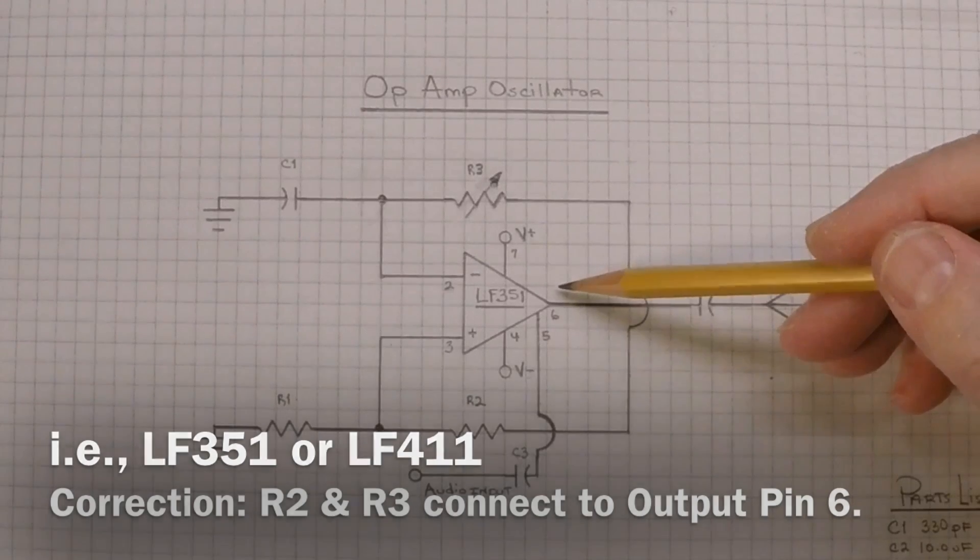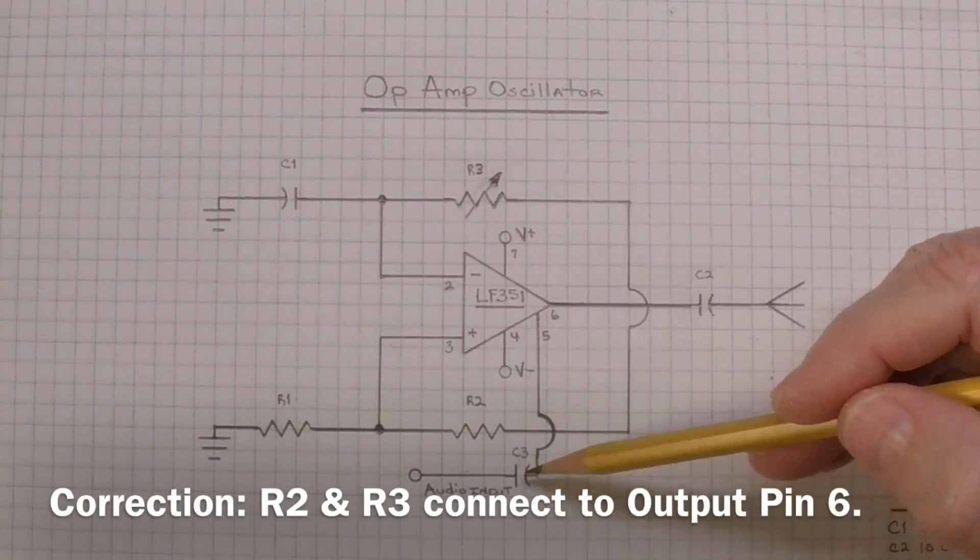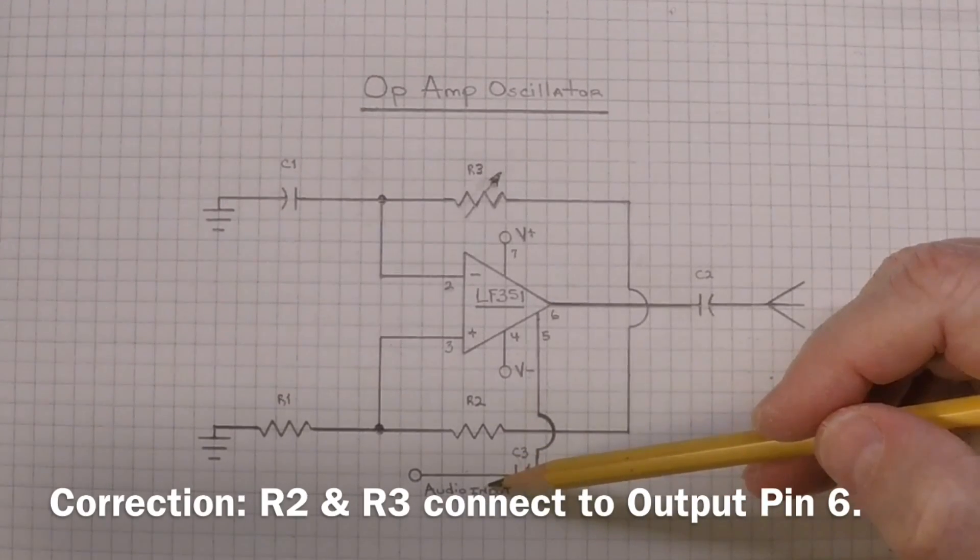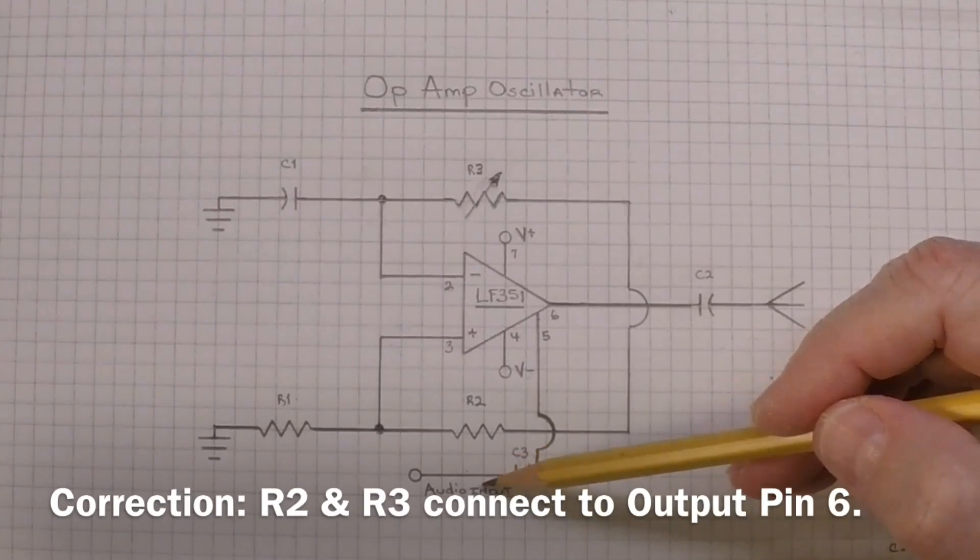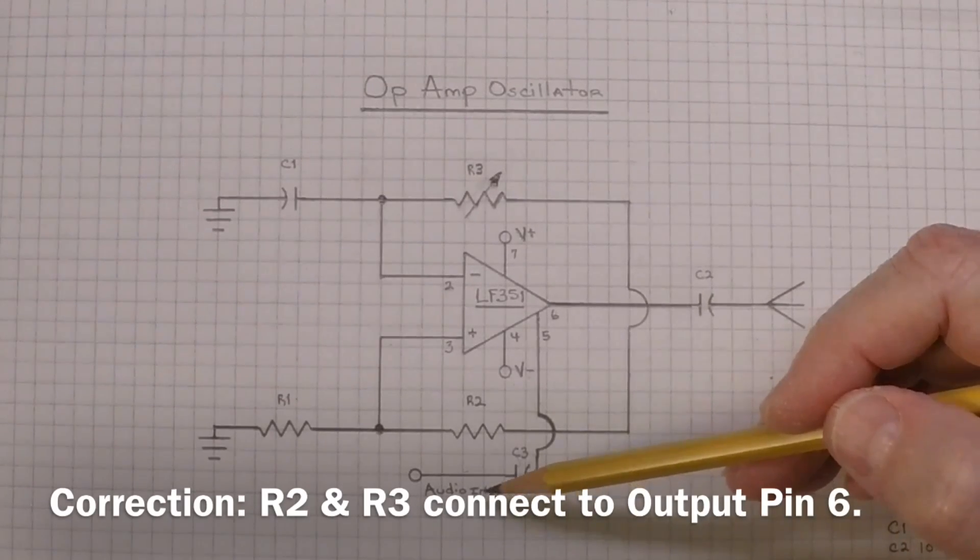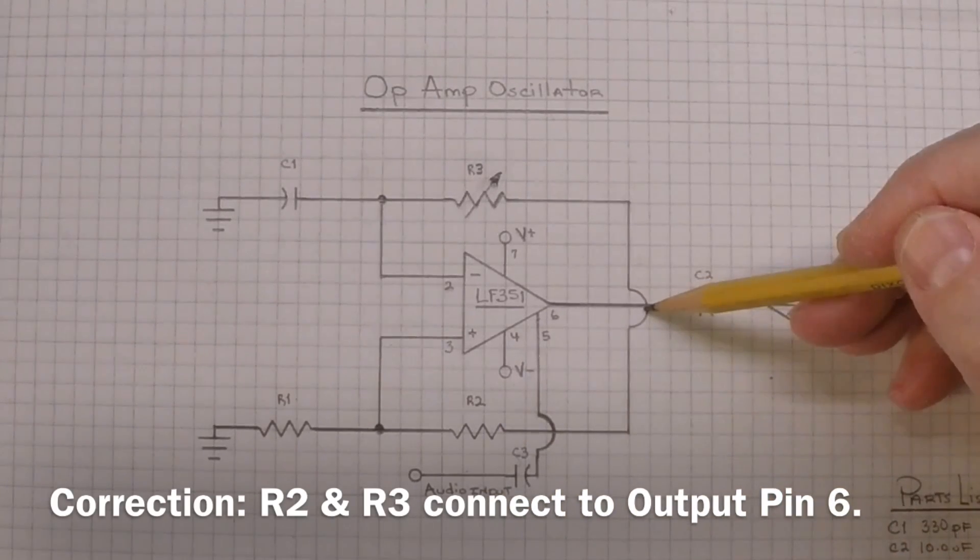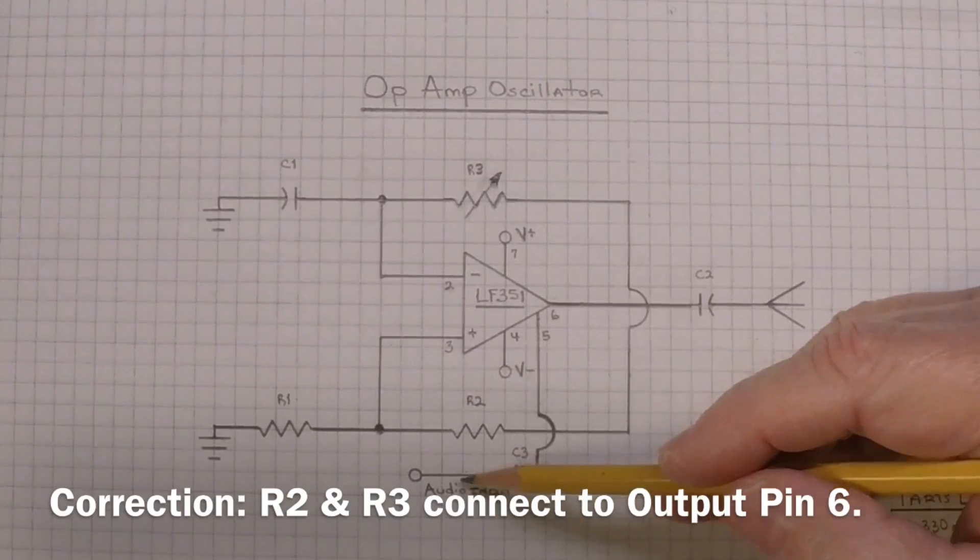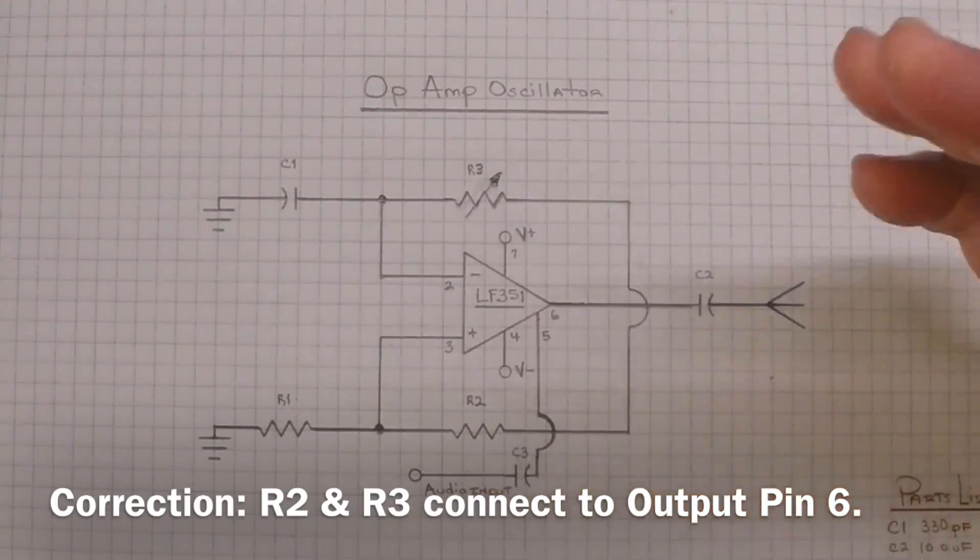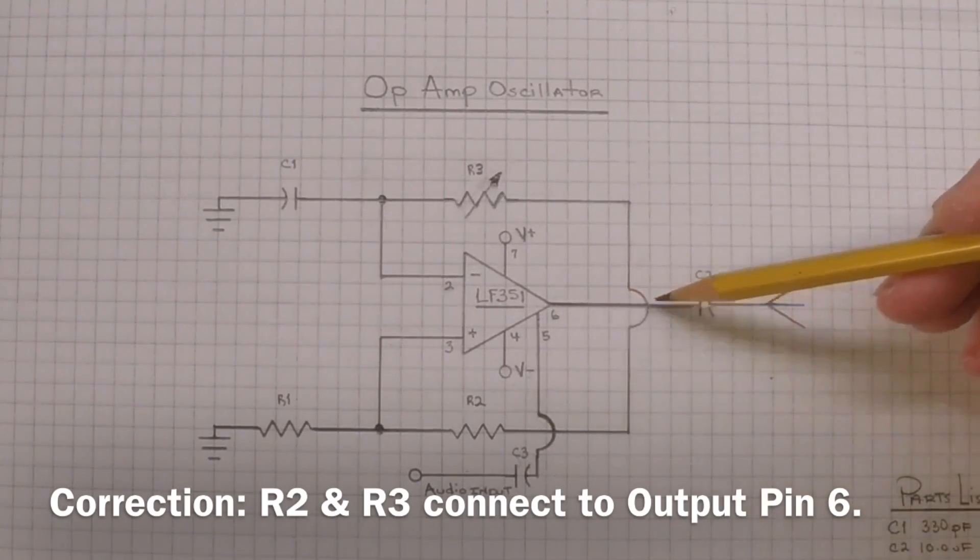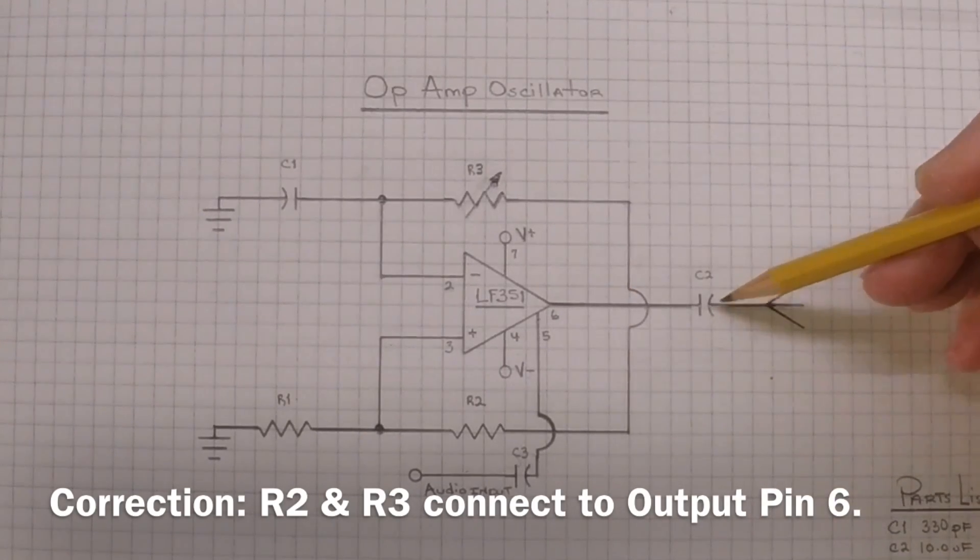And the C3 is a one microfarad cap. Audio input requirements are very minimal, so I didn't measure, but I've got my volume on my iPhone about maybe a third of the way up to drive a comparable audio output to an adjacent AM station. So very little input, probably two to three hundred millivolts would be my guess.